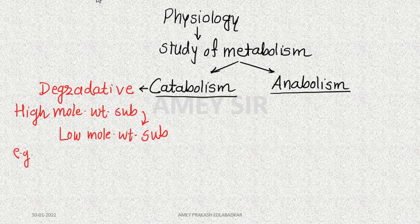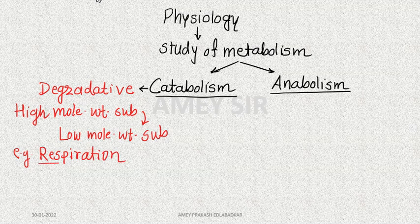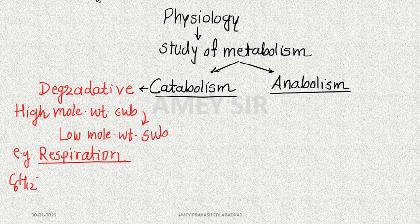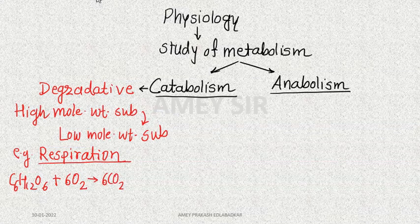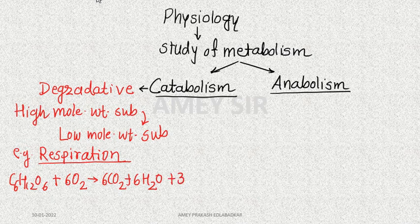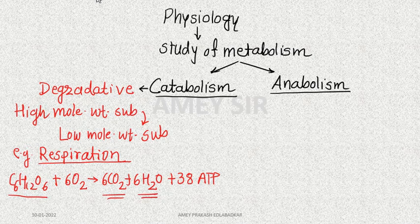The example of catabolism is respiration. For aerobic respiration the equation is: C₆H₁₂O₆ + 6O₂ → 6CO₂ + 6H₂O + 38 ATP. Energy is released in the form of ATP. This high molecular weight substance is converted into low molecular weight substances.